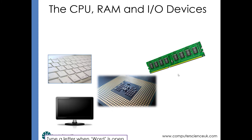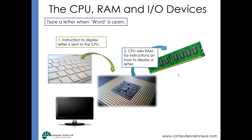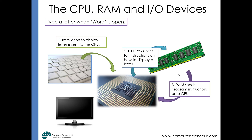Let's look at another example. Imagine you're typing a letter into a word processor that's already running. You press keys on the keyboard — an input device — and the instruction to display a letter on the screen is sent from the keyboard to the CPU. Because the program is already running, it's already been loaded onto the RAM, so the CPU asks the RAM for instructions on how to display that letter. The RAM sends the instructions back to the CPU, which then sends an instruction to the monitor to display the letter on screen.